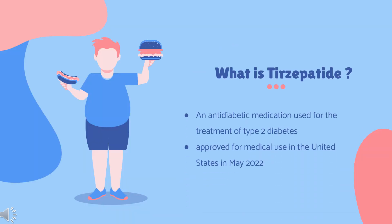Tirzepatide, sold under the brand name Mounjaro, is an anti-diabetic medication used for the treatment of type 2 diabetes. It is administered through subcutaneous injection. Tirzepatide was approved for medical use in the United States in May 2022, in the European Union in September 2022, in Canada in November 2022, and in Australia in December 2022.